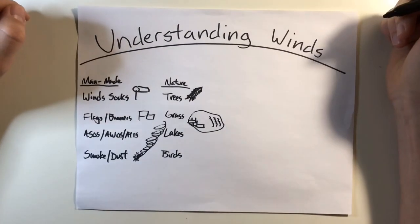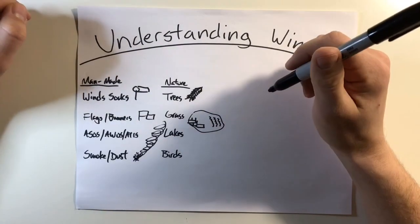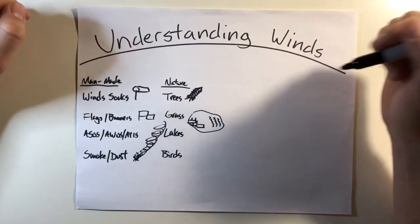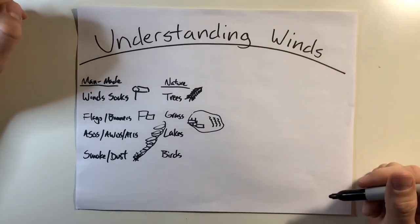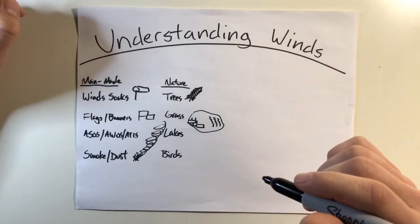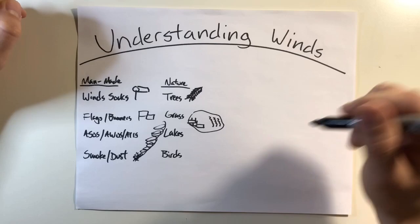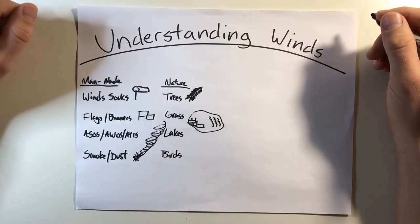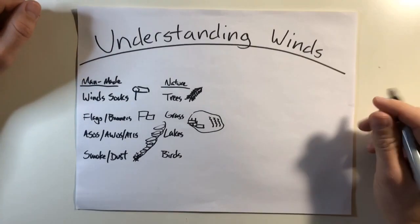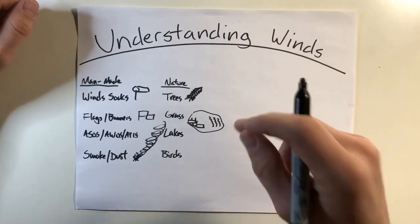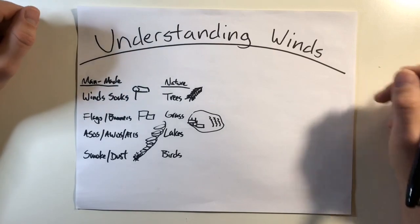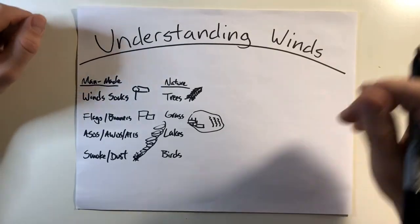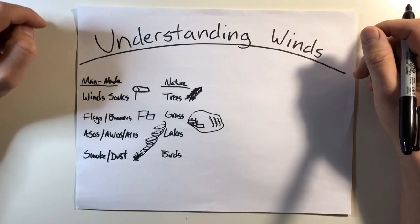But that concludes part one of understanding the winds. And part two, I'm going to get into some of the indications that you get in the cockpit and some tips and tricks that you can kind of identify and narrow down exactly where the winds are in the event that you don't have the man-made indications or the nature-made indications. Continue to tune into the next video. Once again, I'm Jacob. This has been Helicopter Lessons in 10 Minutes. See you.